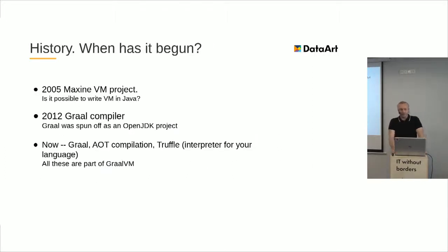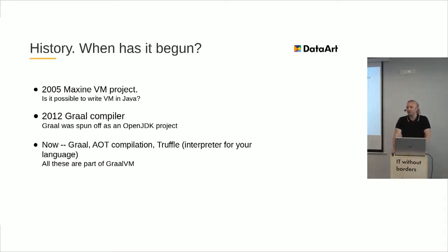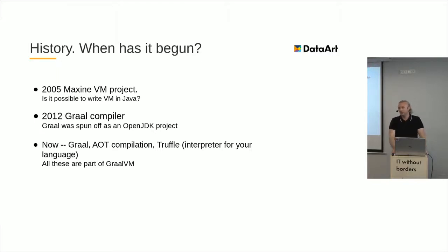A bit of history. There was a project called Maxine VM, which is still active and was started in 2005. The main question at that time was: is it possible to write virtual machines in Java? In 2012, the Graal compiler — a just-in-time compiler written in Java — was spun off as an OpenJDK project and is now part of OpenJDK. It provides not only a JIT compiler but a lot of additional tools for ahead-of-time compilation and writing interpreters for your own languages.